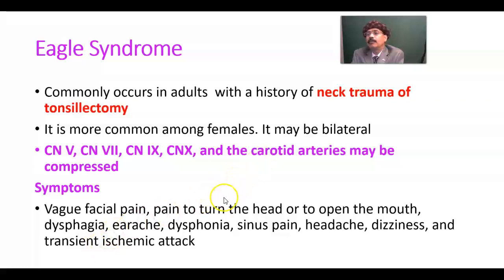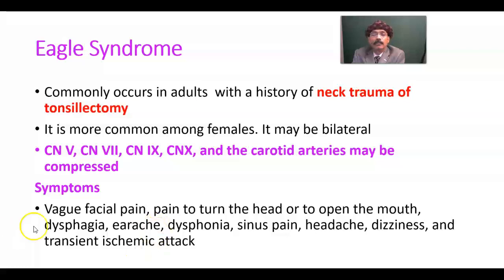The carotid artery may be compressed. Over the wall of the carotid artery — specifically the tunica adventitia — we have the sympathetic nerve plexus. The pain may be carried by sympathetic fibers or somatic fibers from the head and neck area, and may also be carried by the trigeminal nerve. So there is pain and vague facial pain, and pain may be around the side of the head and neck.